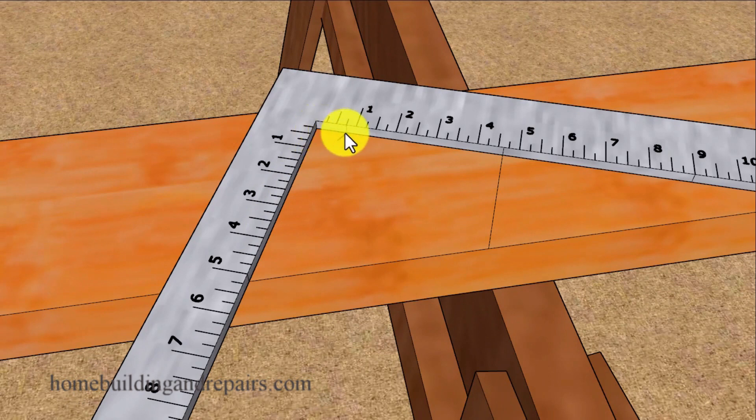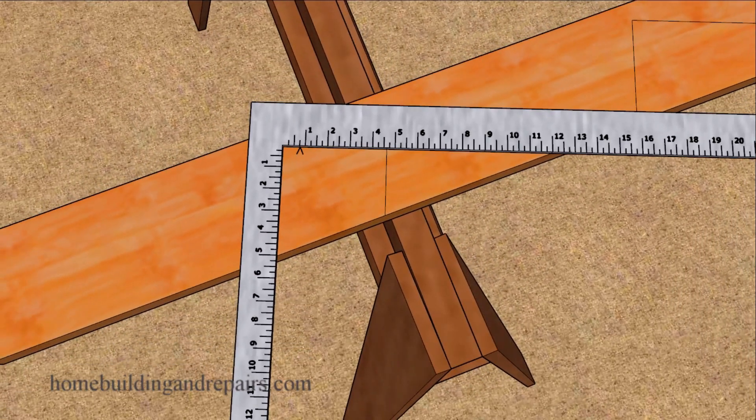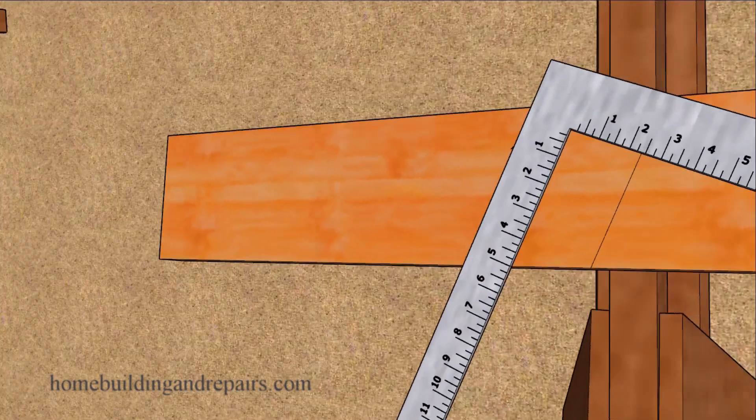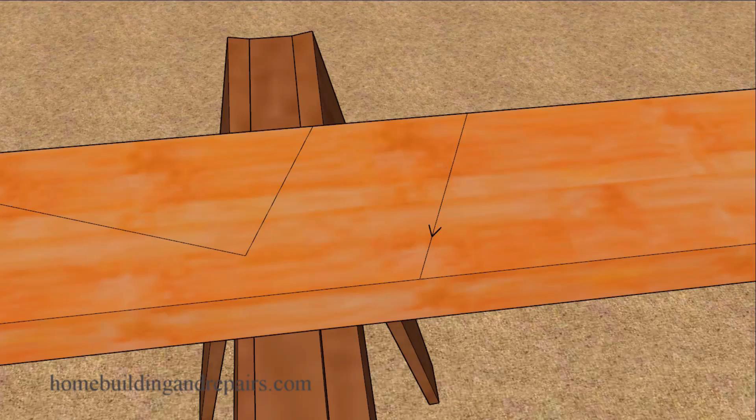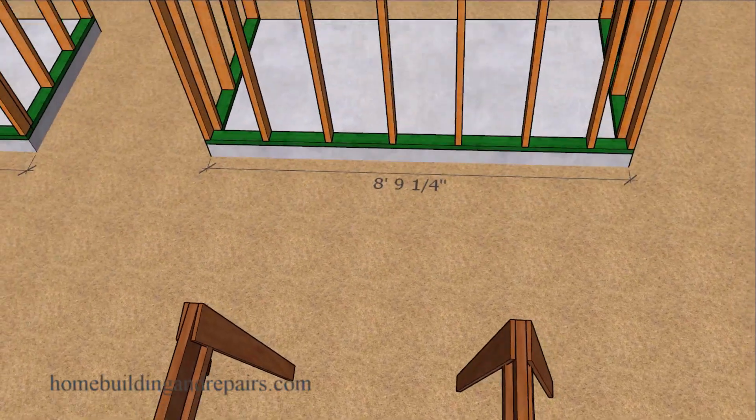Or we can deduct the three quarters of an inch we need for half of the thickness of our roof ridge and then make a mark there instead of using the previous method, providing you with a better method or another method that might work for you. Then we can move the framing square over to the desired location so that we can mark the top of our roof rafter. After we have done that we can cut it and then check it to make sure that it fits.